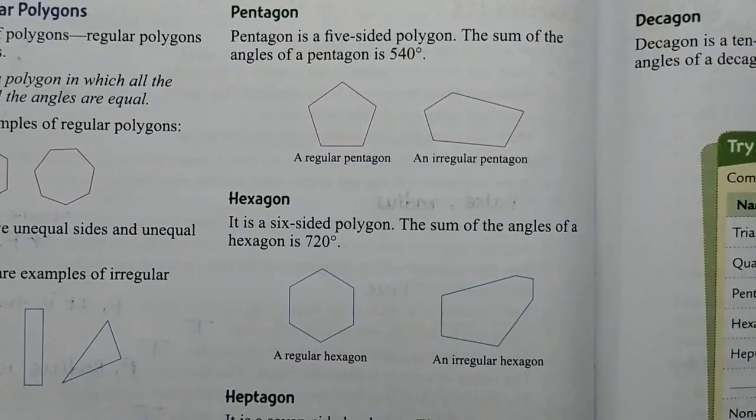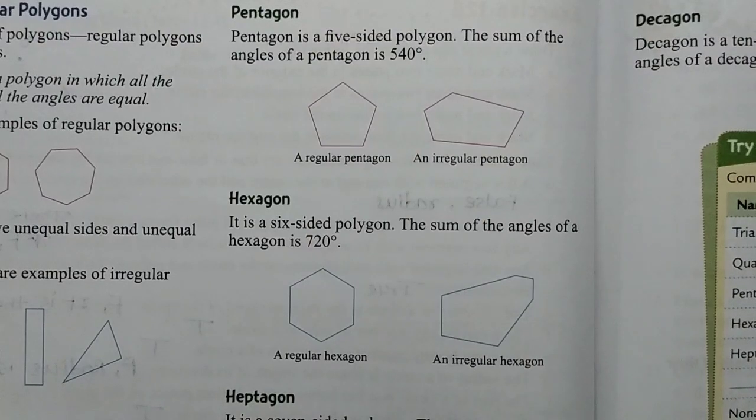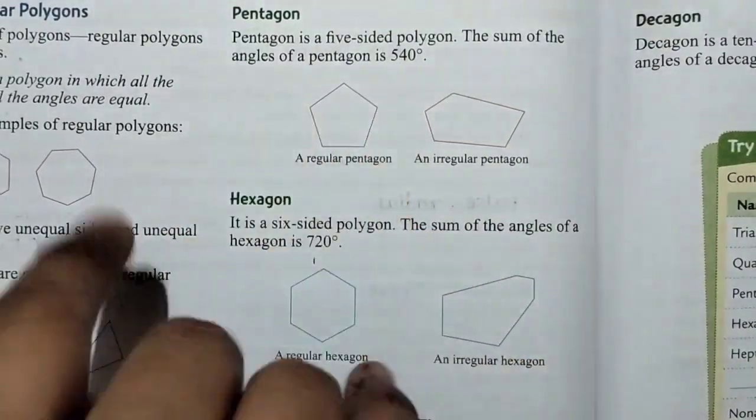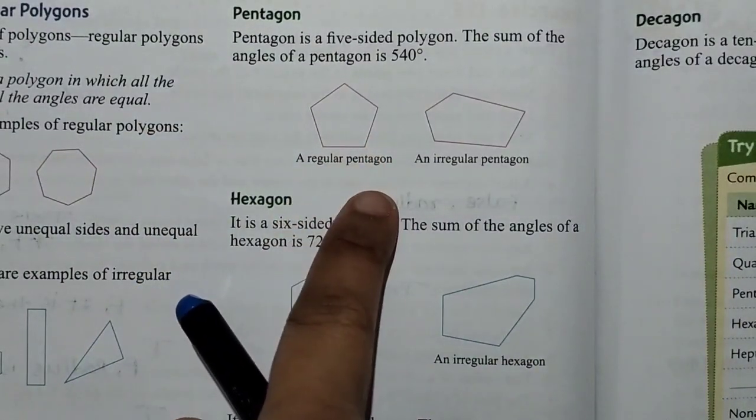Next is pentagon. In pentagons, there are five sides and the sum is 540 degrees. This is regular pentagon.